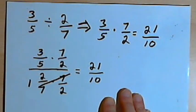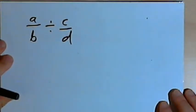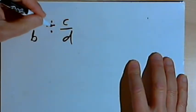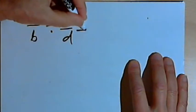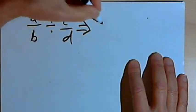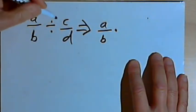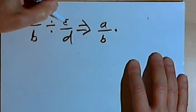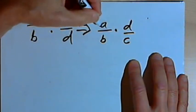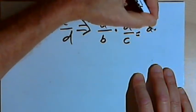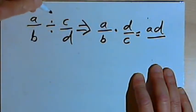Now, if we want to prove that this is going to work for any two fractions, instead of using numbers I can use variables. I can have the division problem a over b divided by c over d. I'll turn that into multiplication by writing a over b, changing the division sign to a multiplication sign, and taking the reciprocal of c over d — flipping it upside down to make d over c. So I've got a over b times d over c. Multiplying the numerators gives ad, and multiplying the denominators gives bc.